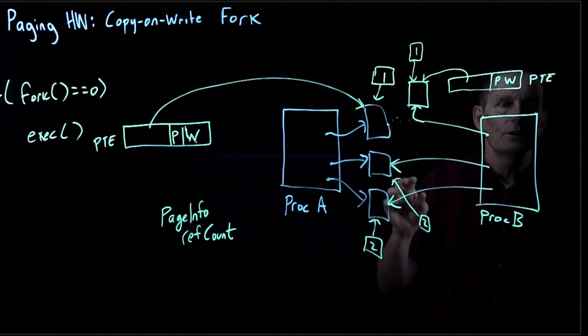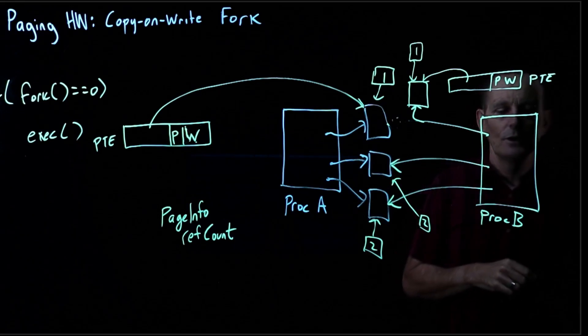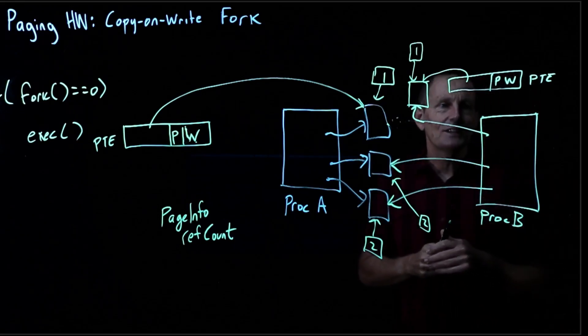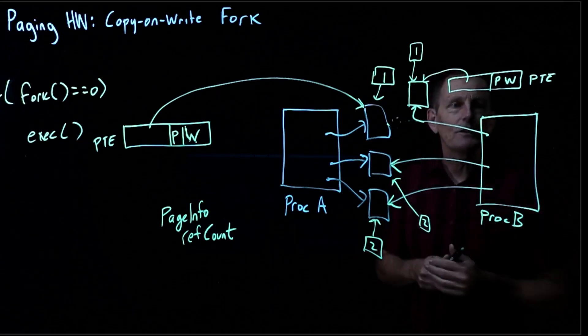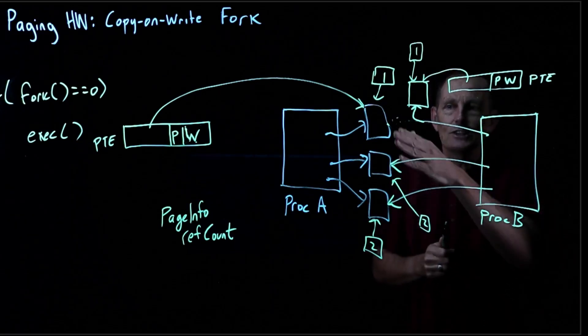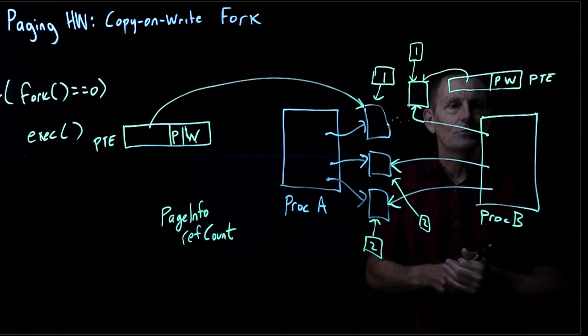These two are still shared. If process B now does exec, then we will again replace all these. But notice we had to only allocate one extra page instead of all the extra pages from process A.